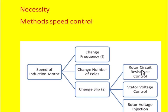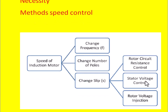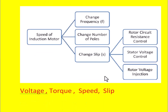To get the change in slip, there are three methods available: one is in the slip ring induction motor — the rotor circuit resistance control method. Next is the stator voltage control method, which is used for the squirrel cage induction motor. Similarly, the rotor voltage injection method is used in the slip ring induction motor.